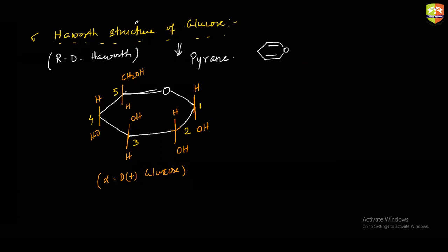To summarize drawing the Haworth structure: draw a six-membered ring with oxygen, at second carbon OH on the bottom, then top, then bottom, then CH2OH at the top. The sixth carbon is not a member of the ring. OH on the first carbon at the bottom means alpha; OH at the top means beta.